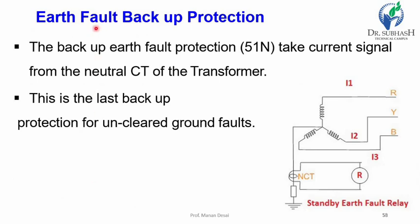Earth fault backup protection — relay number 51N — takes the current signal from the neutral CT of the transformer. This is the last backup protection for uncleared ground faults, providing an extra relay connected for earth fault backup protection.